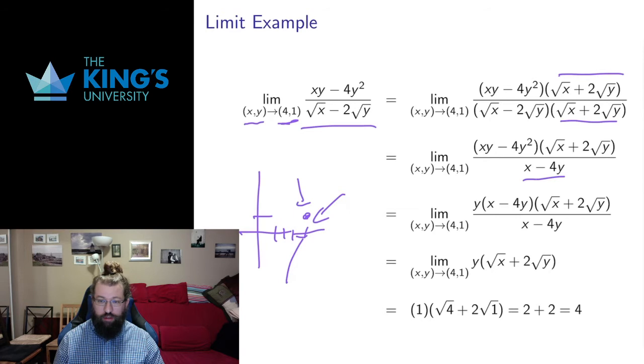I get the first term, square root of x squared is x. The second term, 2 root y squared is going to be 4y. Then I can do a little more factoring by factoring a y out of this term. I see that I get similar terms that I can cancel off there, leaving only y and this conjugate term. Now I've gotten rid of the problematic denominator and I can just evaluate.